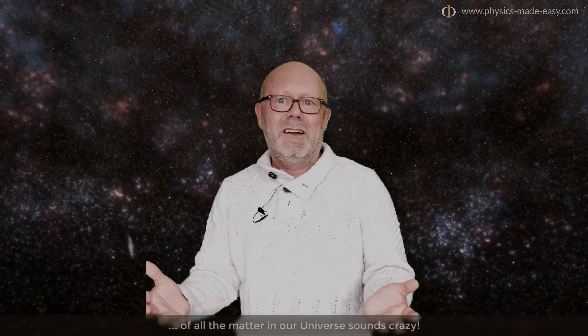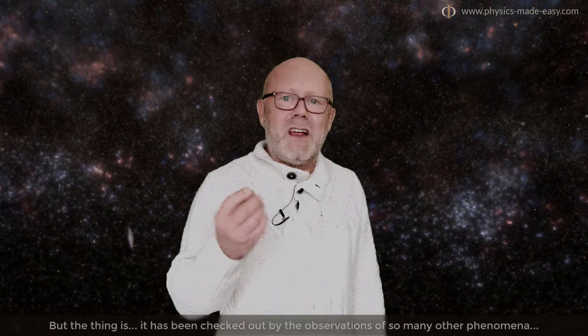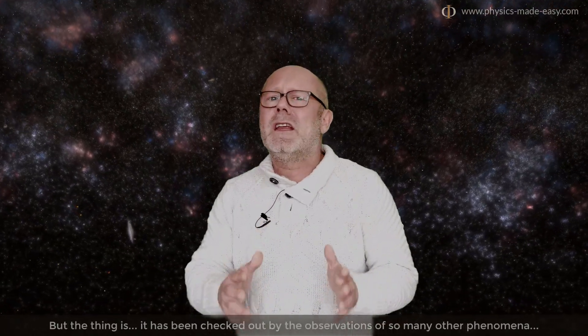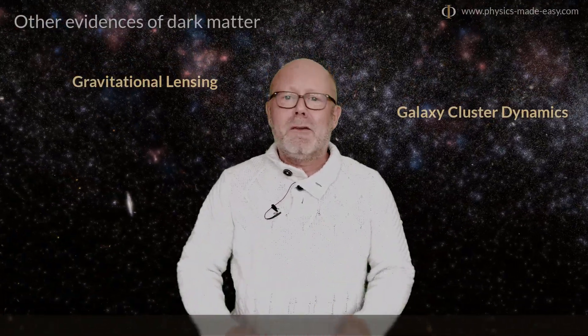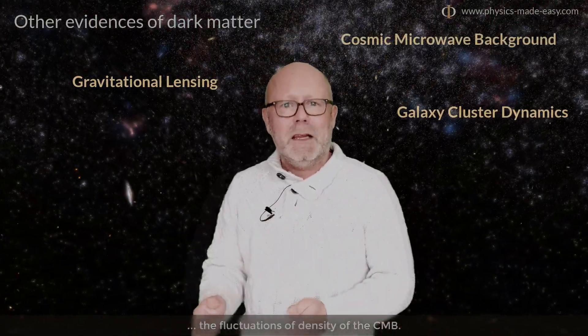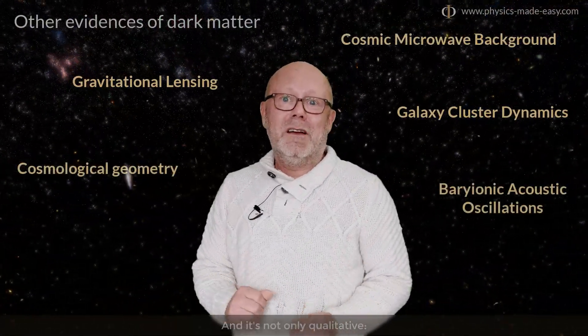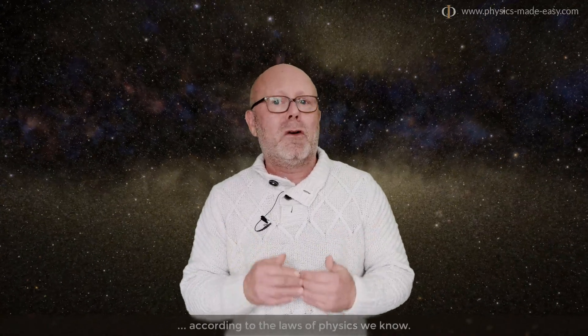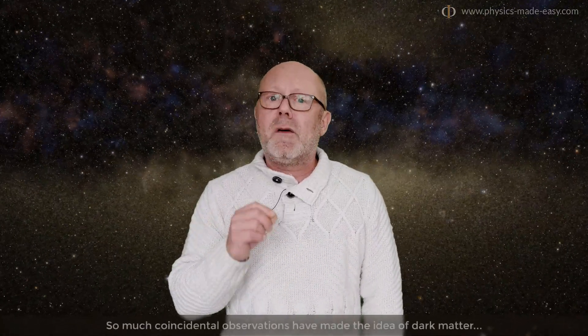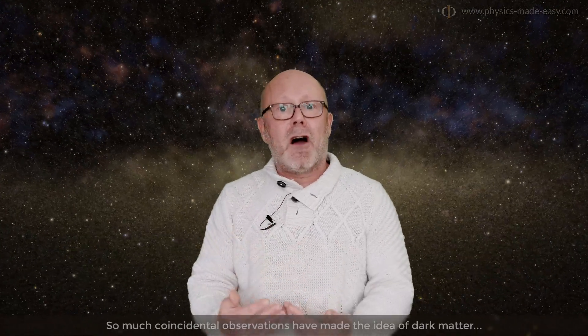The idea that there is a dark matter that composes five-sixths of all the matter in our universe sounds crazy. But the thing is, it has been checked out by the observation of so many other phenomena, like gravitational lensing, the dynamics of cluster galaxies, the fluctuation of density of the CMB. And it's not only qualitative, the numbers match. In all cases, we need five or six times more matter to make the universe work according to the laws of physics we know. So much coincidental observations have made the idea of dark matter consensual in the scientific community.